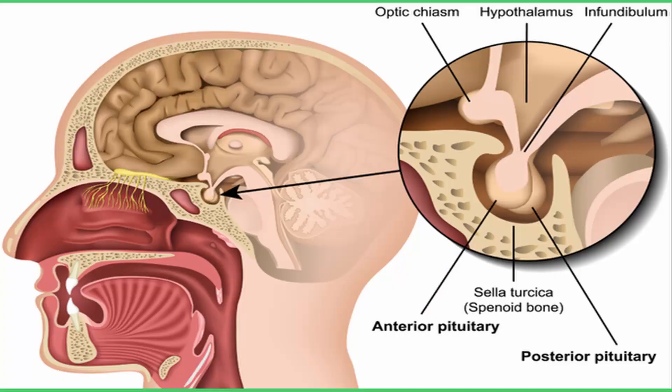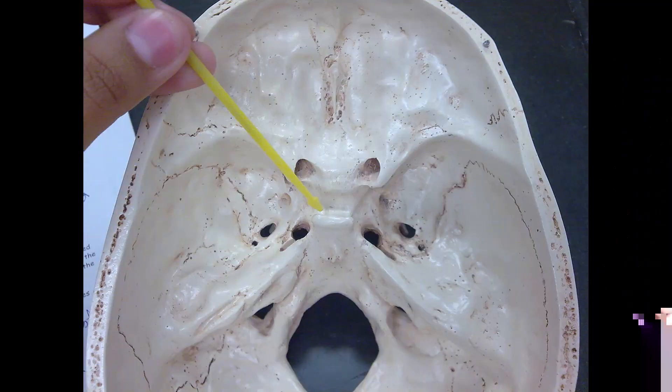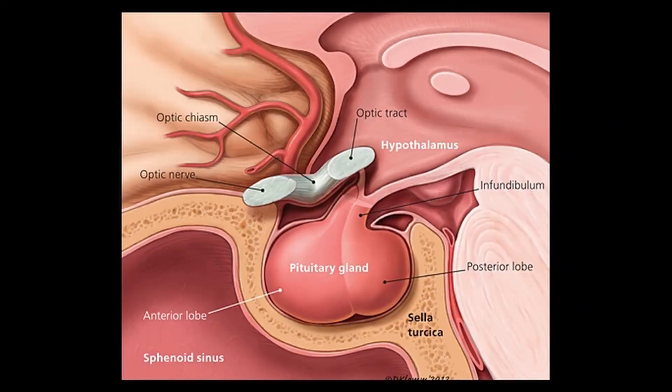The pituitary gland, also called as the master gland of the body, is responsible for the release of various hormones from different glands of the body like thyroid, adrenal, etc. Now this is where the pituitary is located, quite deep inside the brain, and it is nicely protected inside a bony case called as the sella turcica. A very important anatomical relation is that just above the sella there is what's called as the optic chiasm, which is a pair of nerves that begin from your eyes and are responsible for vision.